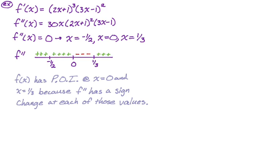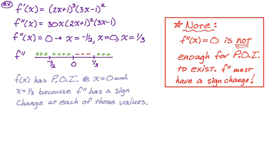Note this — it's the most common mistake: f double prime equaling zero is not enough for a point of inflection to exist. You actually need a sign change. In fact, f double prime doesn't even need to equal zero — it only needs a sign change. Maybe f double prime doesn't exist at the point of inflection, but if the function exists there and there's a sign change in the second derivative, there's a point of inflection. You definitely need to test the signs and have that sign change.